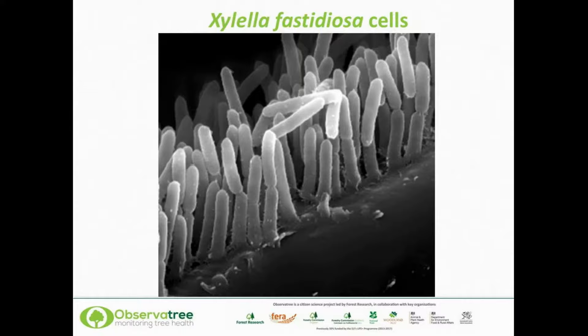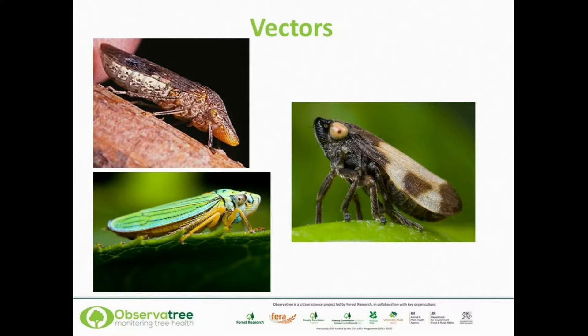There are some vectors. In the Americas, the primary vectors are the glassy-winged sharpshooter, on the top left, and the blue-green sharpshooter, on the bottom left. These vectors don't occur in Europe. In Europe, the main vector is the common meadow spittlebug, or froghopper, seen on the right. You'll recognise the juveniles as cuckoo spit. The thing they have in common is that they feed on the xylem of plants.